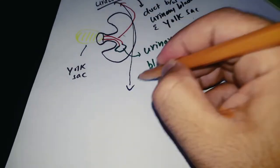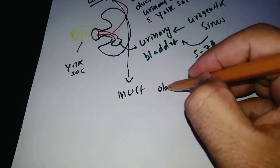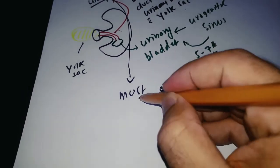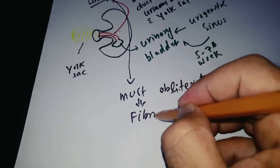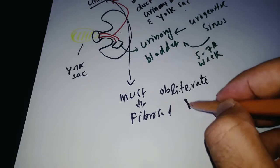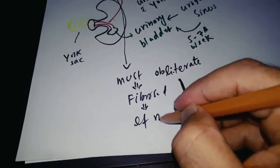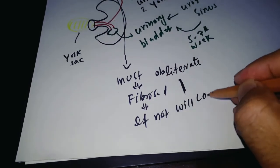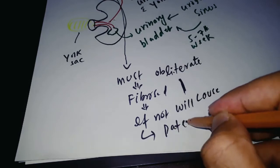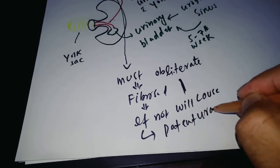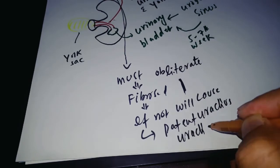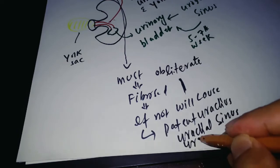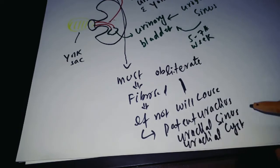This urachus must obliterate or fibrose. If it doesn't obliterate or fibrose, it will lead to different urinary bladder anomalies like patent urachus, urachal sinus, and urachal cyst.